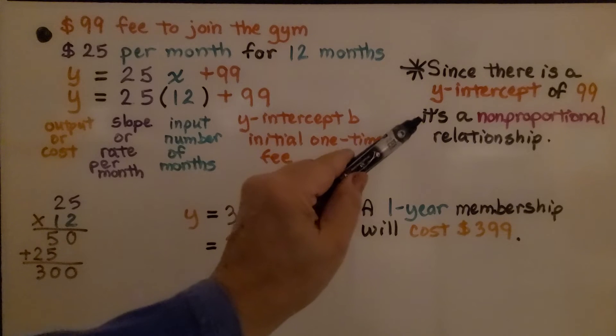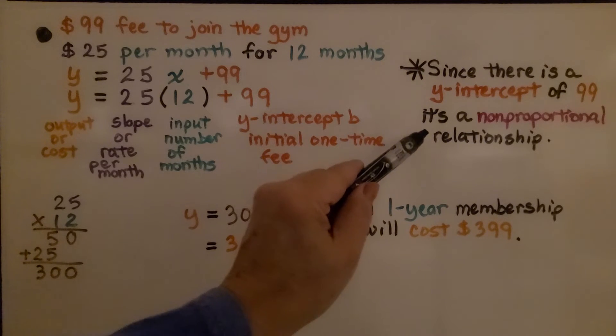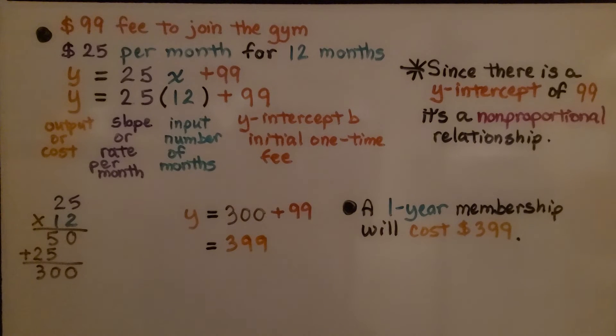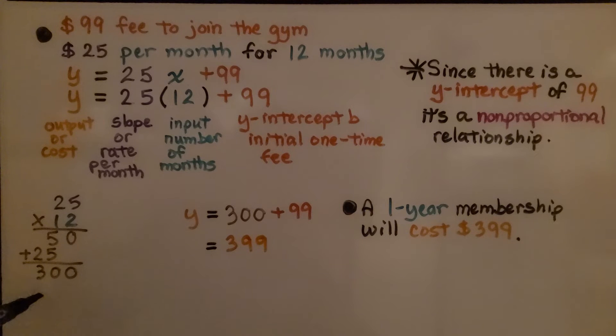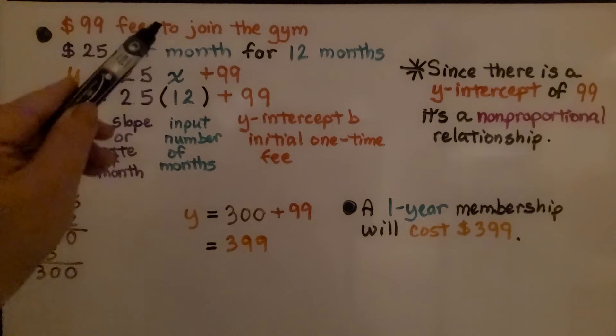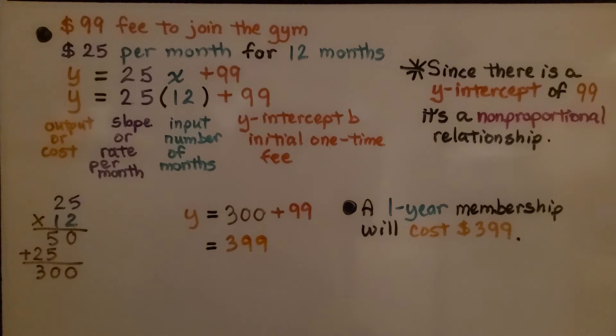Since there is a y-intercept of 99, it's a non-proportional relationship. We multiply 25 times 12, we get 300. We have 300 plus 99, that's 399. We know a one-year membership will cost $399. That's the monthly fee plus the initial $99 fee.